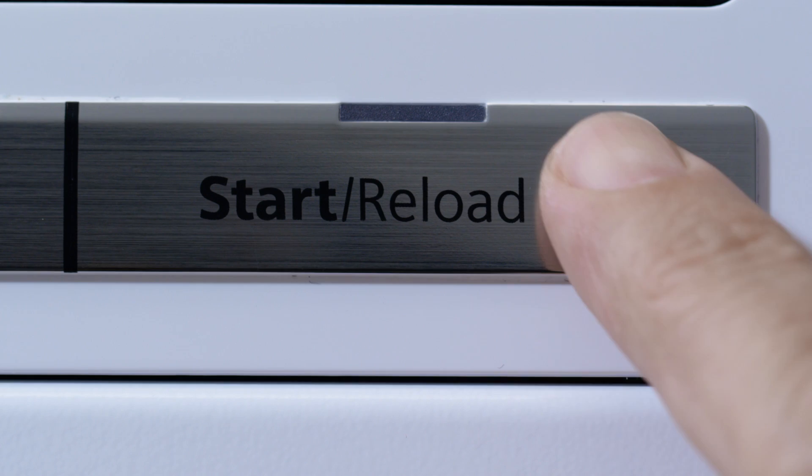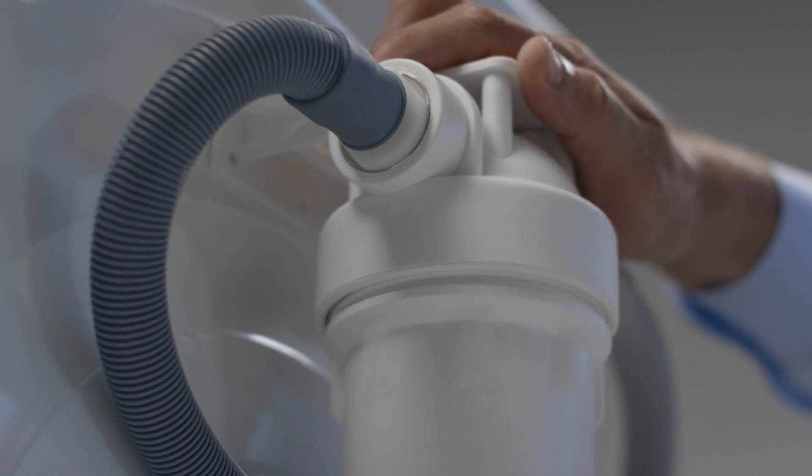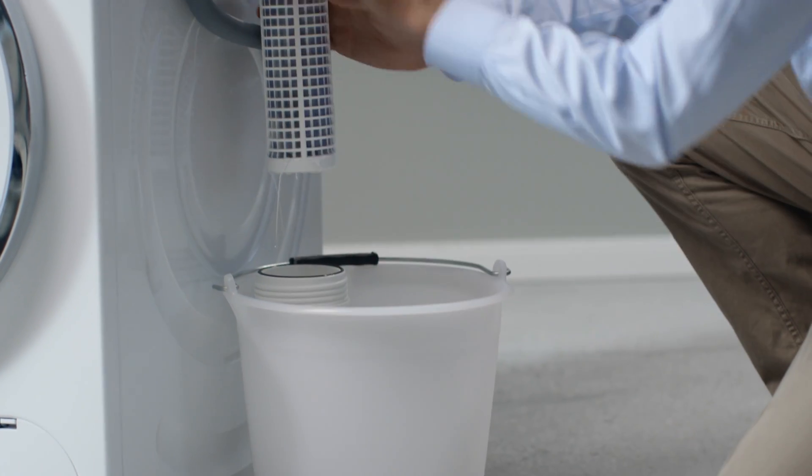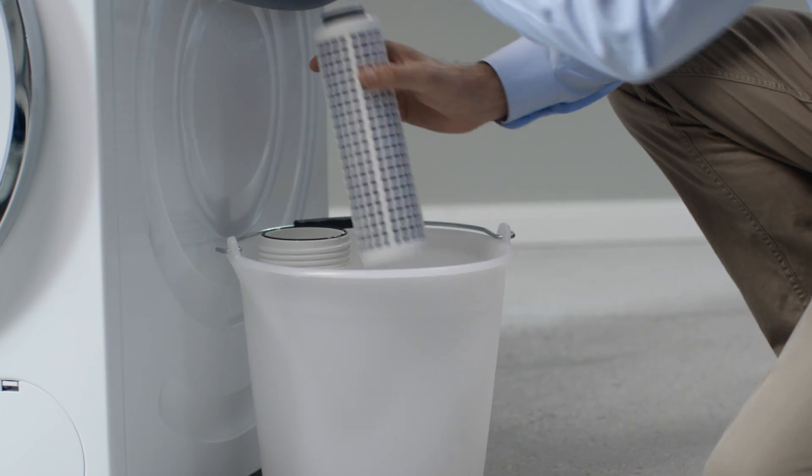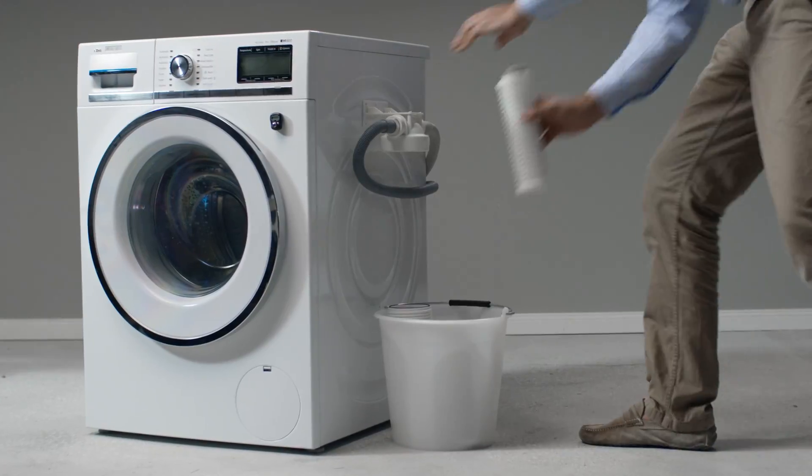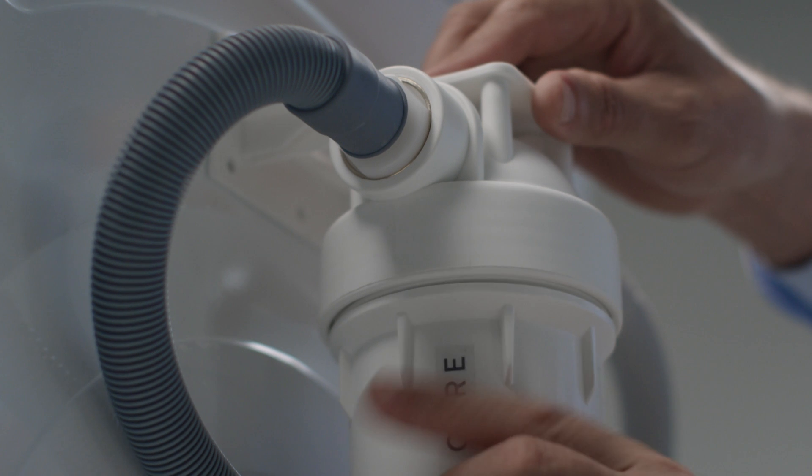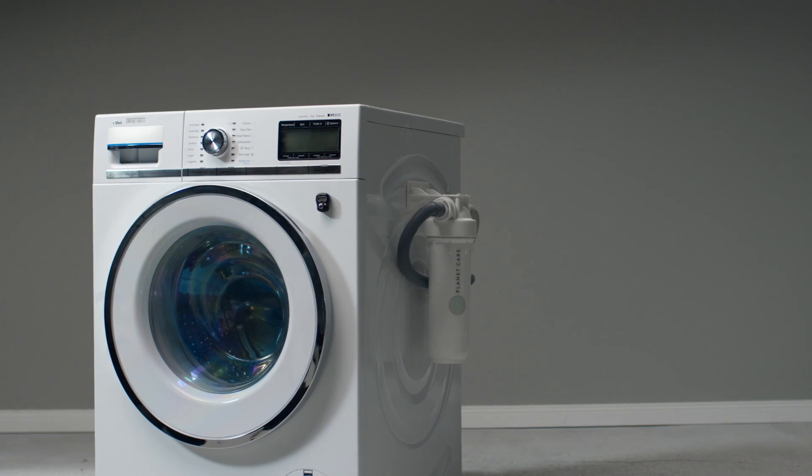To replace the cartridge, turn off the machine. Unscrew the cup and remove the cartridge. Let the cartridge drain and dry so that you can return it for reuse. Now take a new cartridge and attach it to the housing top. Screw the cup back on and your filter is ready to use.